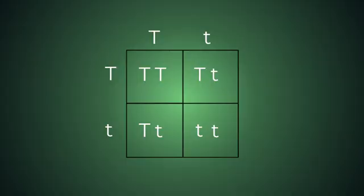So what is a dihybrid cross? It's a breeding experiment that tracks the inheritance of two traits simultaneously. In my previous video, we looked at a monohybrid cross that only studied one trait — the height of the pea plant, for example. In this video, we're sticking with our trusty pea plants, but we're going to look at two traits: height and flower color.